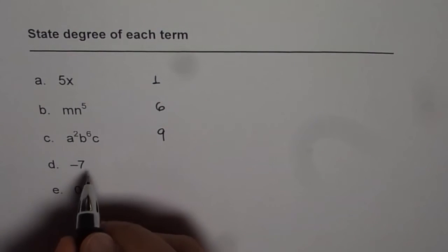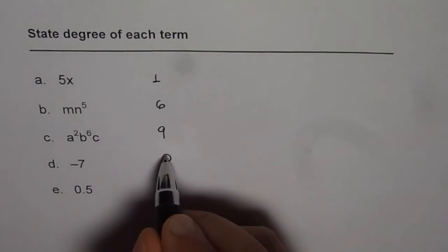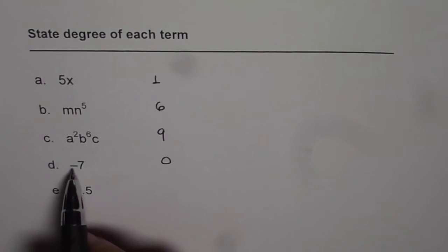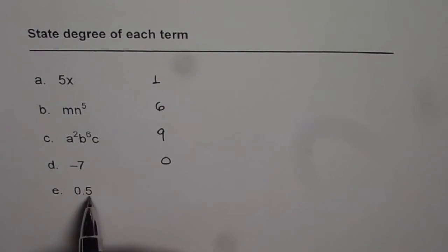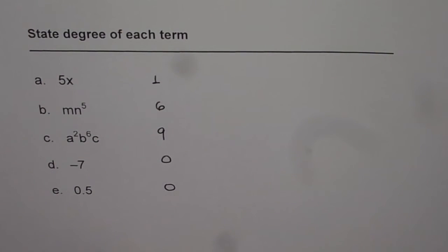Now here, you can think about a variable x to the power of 0. Anything to the power of 0 will be 1. And therefore, degree of minus 7 will be 0. Degree of 0.5 will be also 0. So degree of constant is always 0.